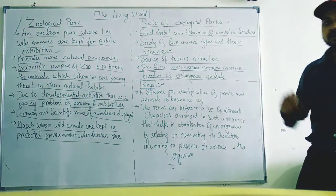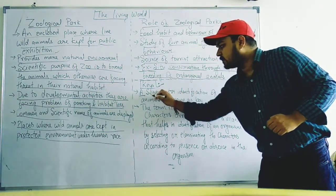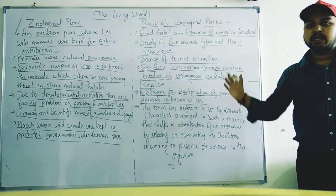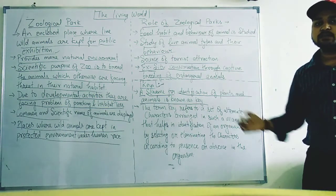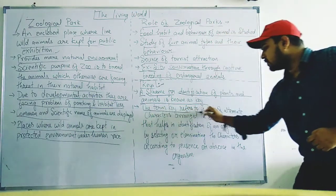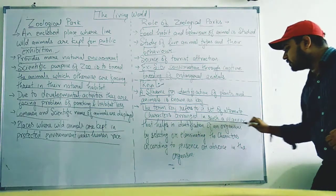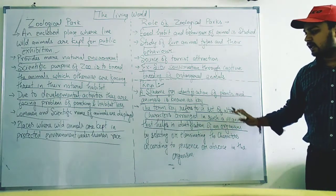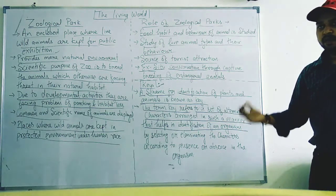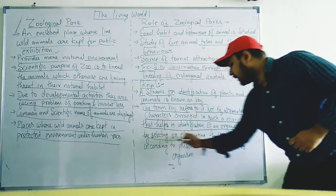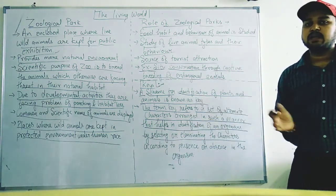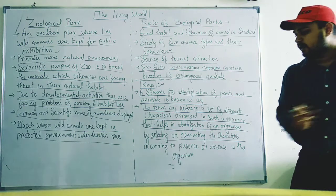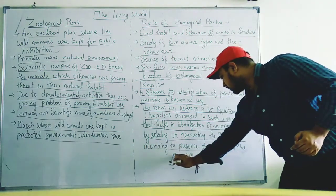Then there are taxonomical keys. What is a taxonomical key? The scheme for identification of plants and animals is known as a key. The term key refers to a set of alternative characters arranged in such a manner that helps in identification of an organism, by selecting and eliminating characters. Characters that are unmatched are eliminated according to presence and absence of traits in the organism.